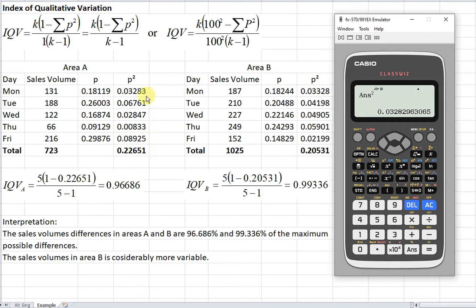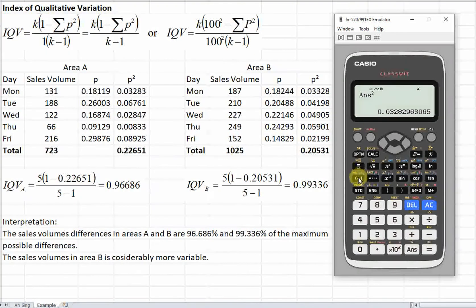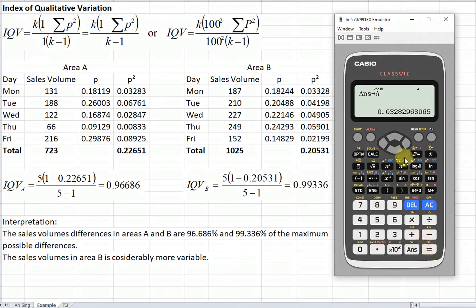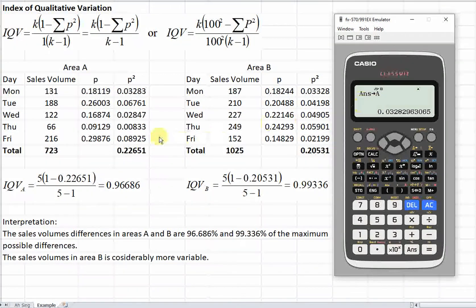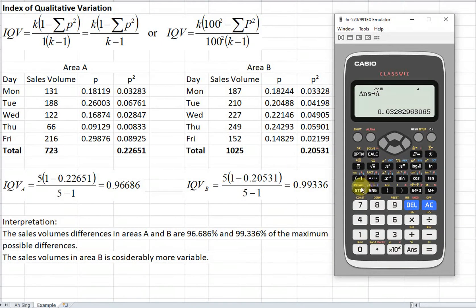Then we repeat the same step for all the categories. Then after that, we total up all the probabilities here. So if we want our answer to be accurate, what we have to do here, we can actually store the value. So the answer we obtain, we just store into, for example, capital A. So already stored, after that we repeat the same step. Then we store in B, C, D, E and so on.